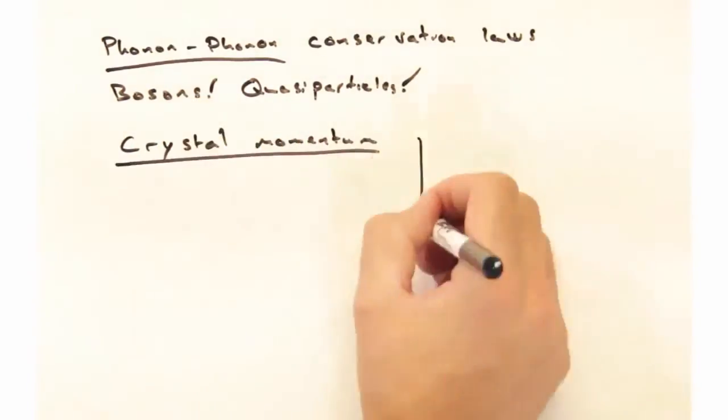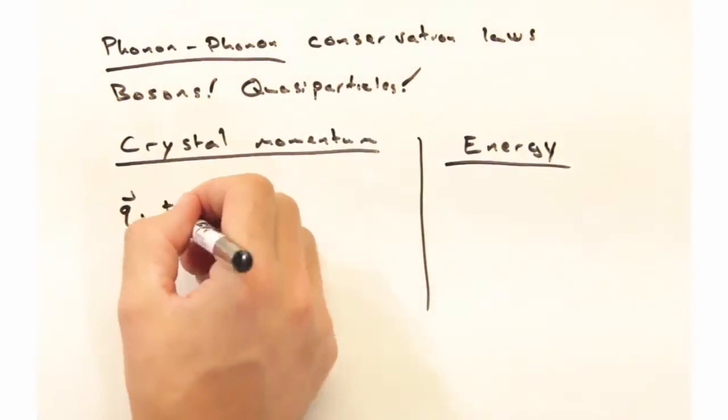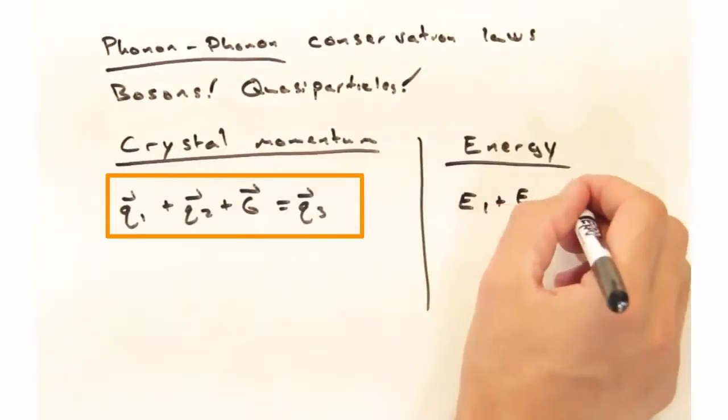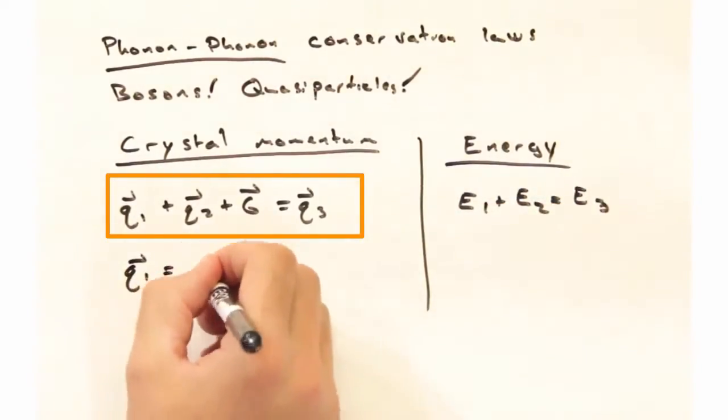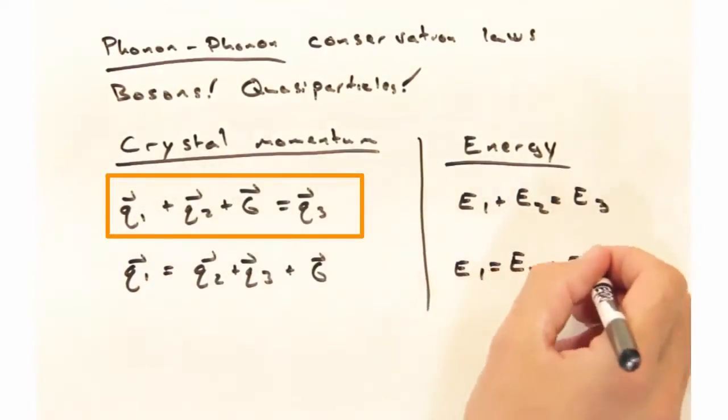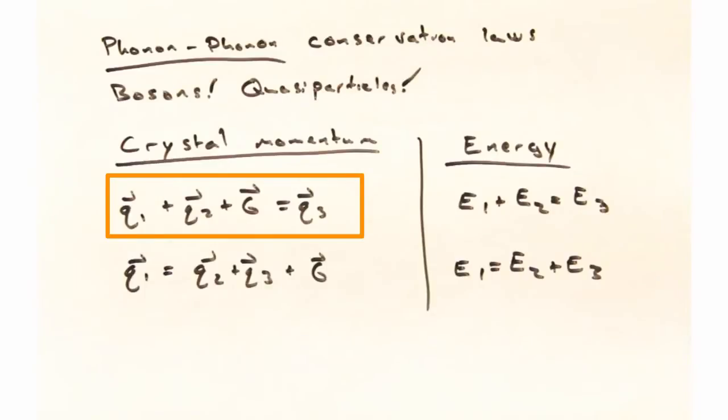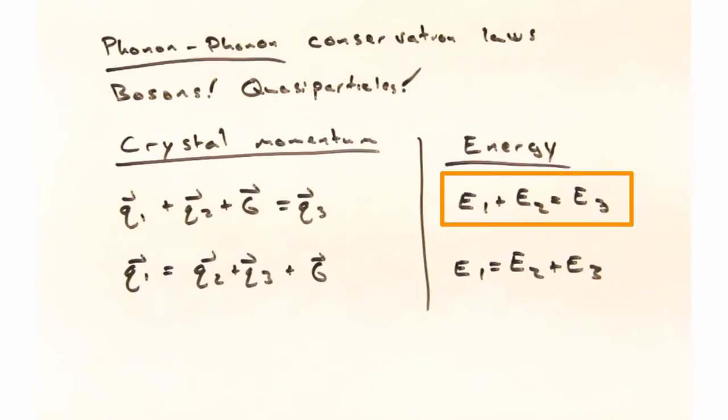For example, in terms of conserving crystal momentum, I could have phonon 1 and phonon 2 plus some reciprocal lattice vector g because of this whole quasi-momentum business. And those two phonons could come together and form phonon 3. And not only do we conserve crystal momentum in this way, but we also conserve energy. So E1 plus E2 equals E3.